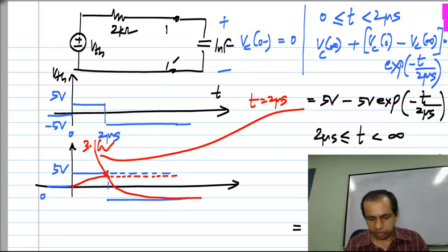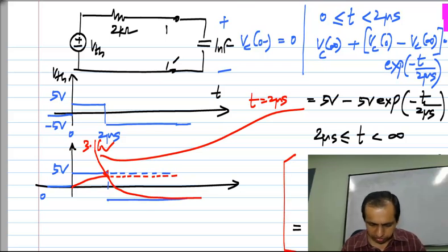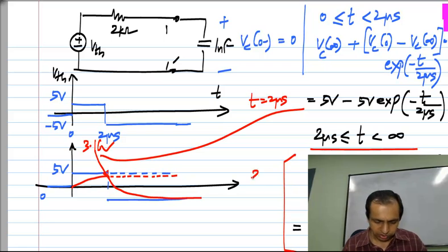One thing I have to be careful about here is this t should be really t minus 2 microseconds. I have not been very strict with notation here. This t does not refer to the time axis t here, but it is the time elapsed after the second step is applied. Maybe I should have written t minus 2 microseconds over there because this applies only to t more than 2 microseconds. This is the second part and this is the first part.